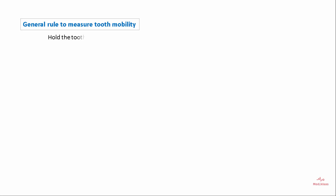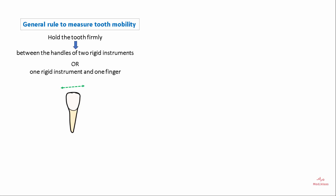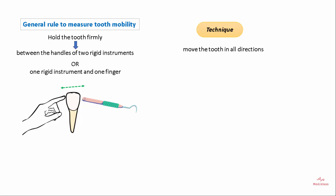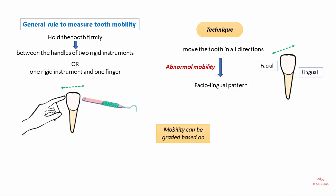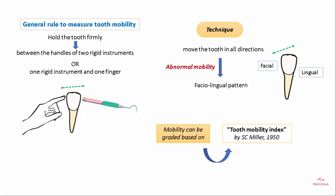To measure tooth mobility, hold the tooth firmly between the handles of two rigid instruments, or with one rigid instrument and one finger. Move the tooth in all directions. If there is abnormal tooth mobility, you will see a facial-lingual pattern of tooth movement.